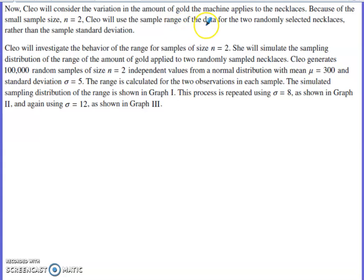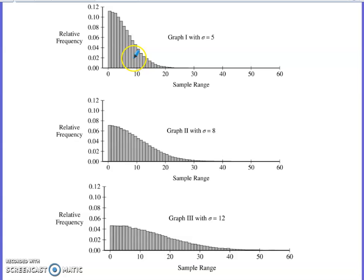So Clio is going to consider the variation in the amount of gold being applied to the necklaces. The sample size is small, so what she's going to use is the sample range of the data for two randomly selected necklaces rather than the standard deviation. With such a small sample size, we're going to go with a different measure of spread than standard deviation. We are going with sample range. So she's going to investigate the behavior of the range for sample size n equals two, and she's going to simulate the sampling distribution of the range of the amount of gold applied to two randomly sampled necklaces. She generates 100,000 random samples of size n equals two. They're independent values from the normal distribution with a mean of 300 and a standard deviation of 5. The range is calculated for the two observations in each sample. The simulated sampling distribution is shown in graph one. Look ahead to graph one. So that's what we see shown right here.